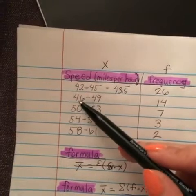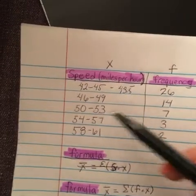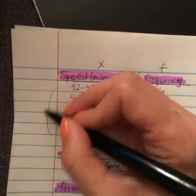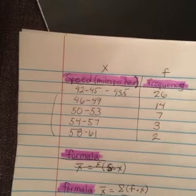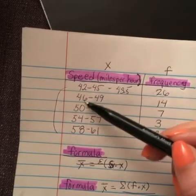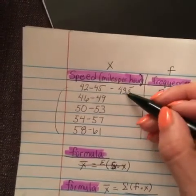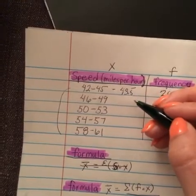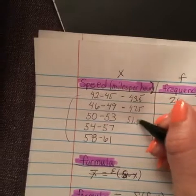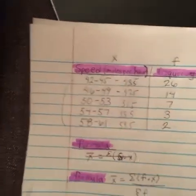You can add 46 and 49 and then divide by 2 to get the midpoint, or you could look at the class size of all of these. The difference between 42 and 46 is 4, so what you can do is take 43.5 and then add 4 more which will be 47.5, and then you can do the same thing which will be 51.5, 55.5, and 59.5.